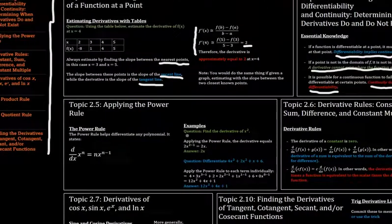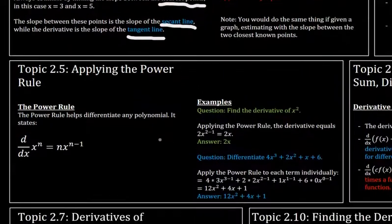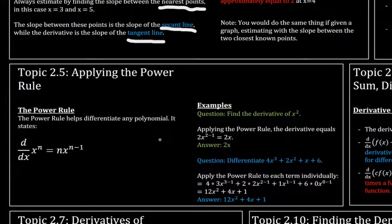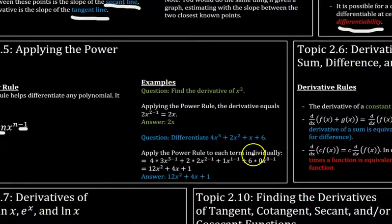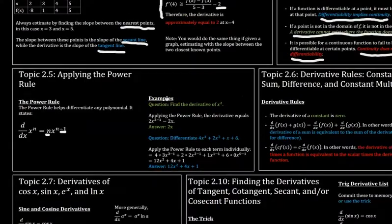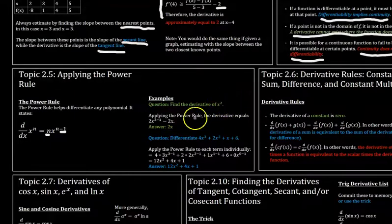Topic 2.5 the power rule introduces a helpful way for differentiating polynomials. The rule is that when you take the derivative of an x to the n term you bring the exponent in front and then subtract one from the exponent and keep it there on top of the x. So we have two examples here. First of all find the derivative of x squared. So we take the two and we put it in front and then we subtract one from the exponent to just get 2x.